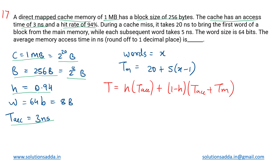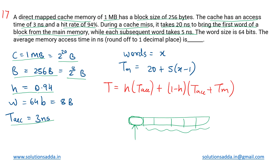During a cache miss, it takes 20 nanoseconds to bring the first word of a block from main memory, while each subsequent word takes 5 nanoseconds. If there are n words and there is a cache miss, the block must be fetched from main memory. Due to a pipeline-like mechanism, the first word takes 20ns and every subsequent word takes only 5ns.